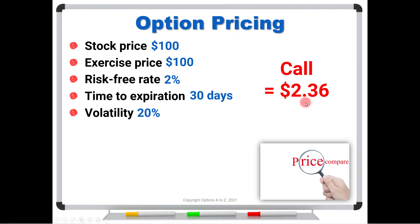Notice that with a price of $2.36, if somebody else were to go into the market and price this option, they would absolutely have to use the stock price of $100, the exercise price of $100, a risk-free rate reasonably close to 2%, and 30 days to expiration. There is just no room for argument except for volatility. One trader might say it's going to be 20%, another might say 25% and come up with a higher call value, or another might say 18% and come up with a lower value. All the debate arises around this volatility number.